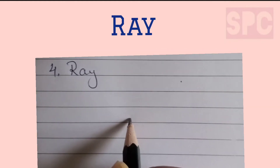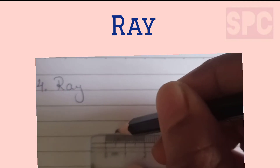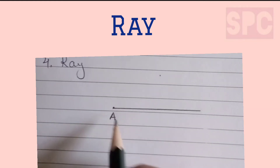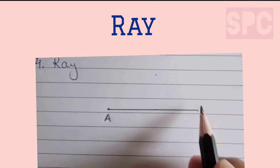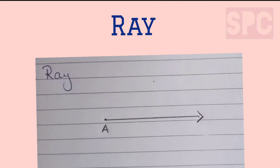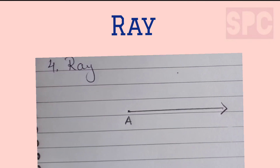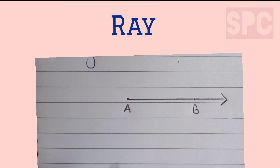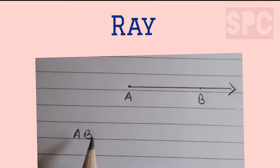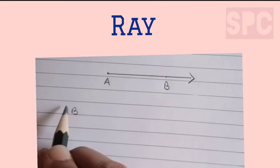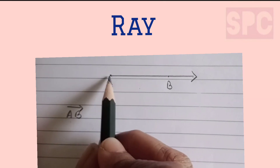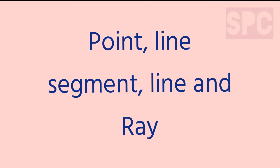Now let us move on to ray. A ray is a straight path that has one end point, and the opposite side keeps extending endlessly. The one end point of the ray is called its initial point — the point from where the ray starts. For example, from point A we draw a ray with an arrow in the opposite direction. Taking any point B on this ray, we call it ray AB, written as AB with a ray symbol above it.